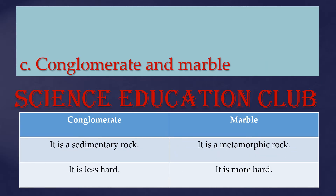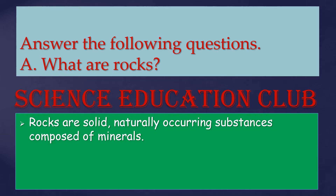Conglomerate and marble: Conglomerate is a sedimentary rock, while marble is a metamorphic rock. Conglomerate is less hard, and marble is more hard. Answer the following questions: What are rocks? Rocks are solid, naturally occurring substances composed of minerals.